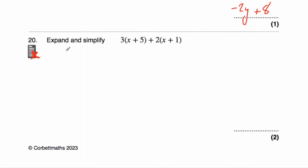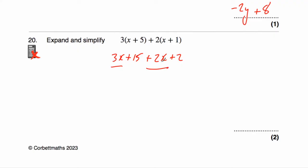Question number twenty asks us to expand and simplify 3(x + 5) + 2(x + 1). We expand each pair of brackets first, then collect like terms. Three times x is 3x, and three times five is fifteen. Then two times x is 2x, and two times one is two. So we've got 3x + 15 + 2x + 2. Collecting like terms: 3x + 2x is 5x, and 15 + 2 is 17. The answer is 5x + 17.